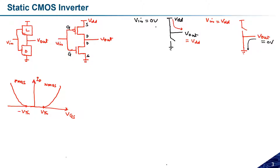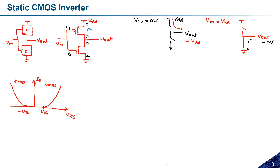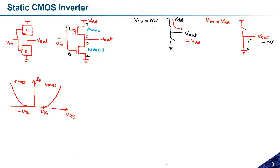If VIN equals zero, the PMOS transistor will be in the on state. This is the PMOS and this is the NMOS. The key property of a MOSFET is that when the device is in the on state, the resistance across the device is very low, and vice versa — if the device is in the off state, the resistance is very high.